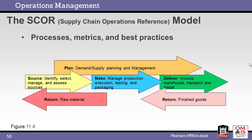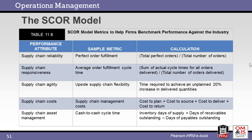The SCOR model is a standardized view of supply chain processes, metrics, and best practices. The model is often used to assess the maturity of a given supply chain. Key elements include plan, source, make, deliver, and return. This table shows various performance attributes and associated metrics. These metrics are used to compare the operation with industry standards and best practices. Examples include perfect order fulfillment, which shows the ratio of perfect orders to total orders. Other metrics address responsiveness, agility, cost, and asset management.